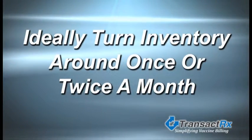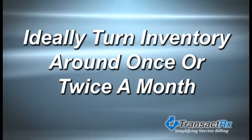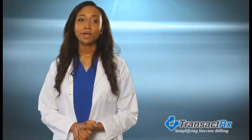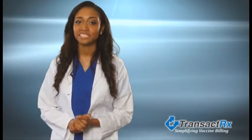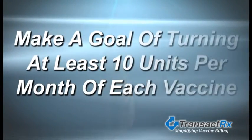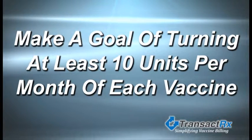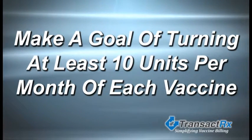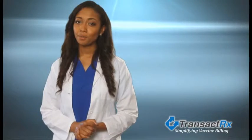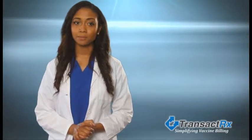Ideally, you would like to turn your inventory once or twice a month depending on your program's volume. Purchasing discounts usually start when you purchase a minimum of 10 units. There should be no reason you should not be able to turn 10 units a month of each vaccine in your program. There are multiple ways to buy at discounted prices.